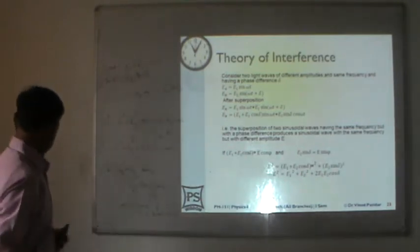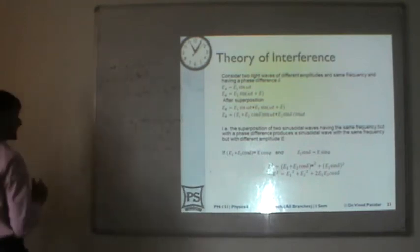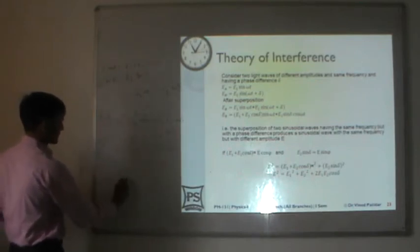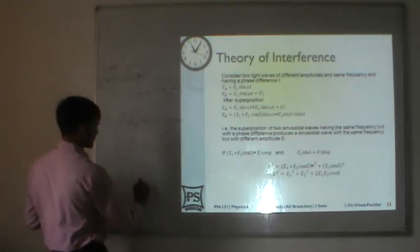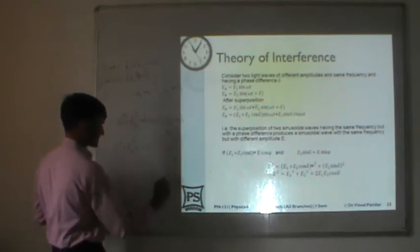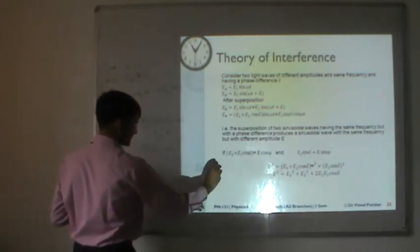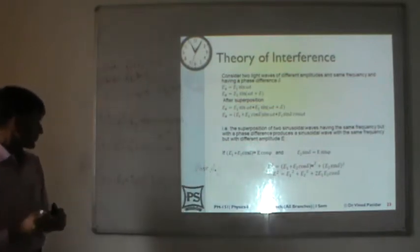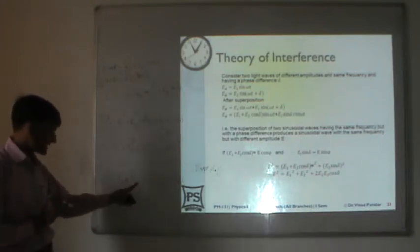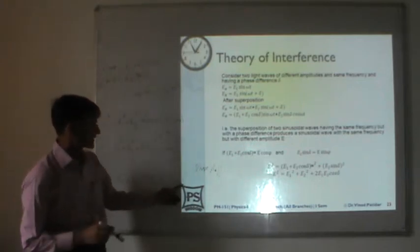Since intensity is proportional to amplitude squared, this can be written as I = I1 + I2 + 2√(I1·I2) cos δ, where δ is the phase difference. So the resultant intensity of two waves depends on their individual intensities plus a term that depends on the phase difference.